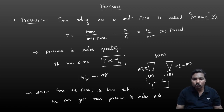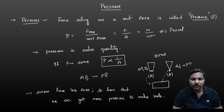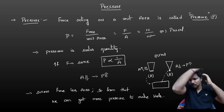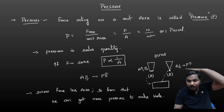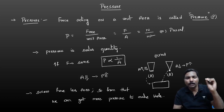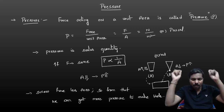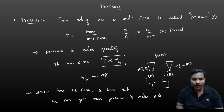For example, coolies wear a cloth on their head. Why? Because whenever they use the cloth, the contact area increases. As the contact area increases, pressure on their head decreases. So they can easily move objects from one place to another. Whenever contact area is less, pressure is more; contact area is more, pressure is less.